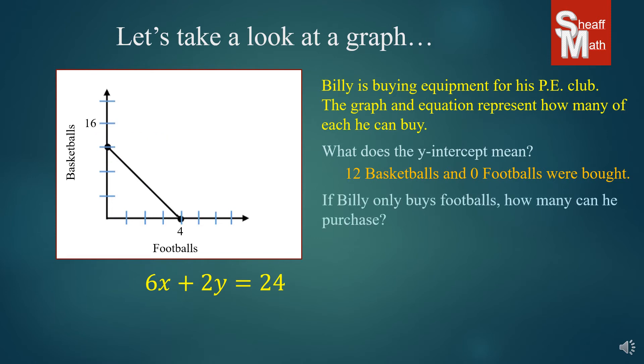Let's take a look at this next question. If Billy only buys footballs, how many can he purchase? If he only buys footballs that means he has zero basketballs and so that is right here, zero basketballs and this is 4, 0. So 4 represents the footballs and 0 represents the basketballs. If he's only buying footballs then he can only buy four.